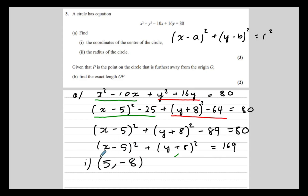The center is at (5, negative 8) — what makes the x bracket 0 is 5, and what makes the y bracket 0 is negative 8. The radius squared is 169, and the square root of 169 is the radius, which is 13.